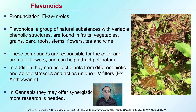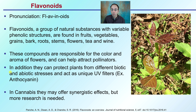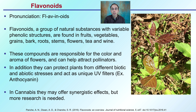Lastly, we have flavonoids. These are a group of natural substances with variable phenolic structures and are found in fruits, vegetables, grains, bark, roots, stems, flowers, tea, and also wine. These compounds are responsible for the color and aroma of flowers and can help attract pollinators. They can also protect plants from biotic and abiotic stresses and can act as UV light filters. For example, anthocyanins — poison ivy when it first emerges has a lot of red tones, which is its way of shielding itself from harmful UV light until it gets established. In cannabis, flavonoids may offer some synergistic effects, but more research is needed as the cannabis plant gains popularity within the medical community.